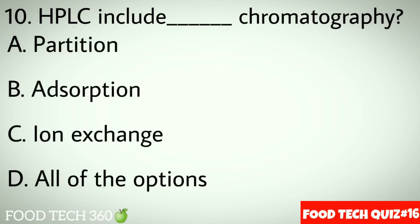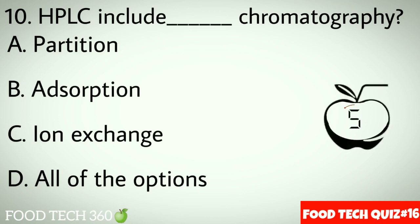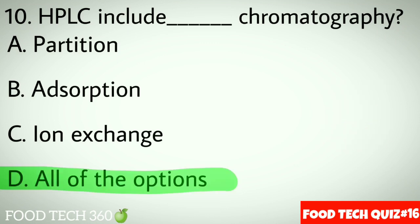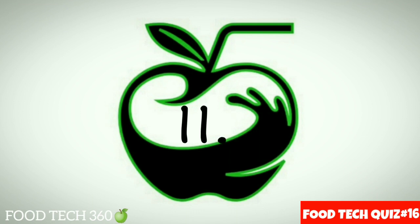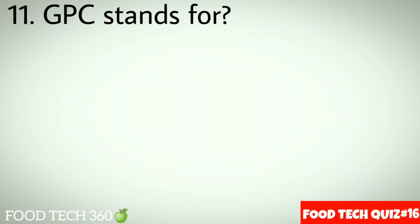Question No.10: HPLC includes dash chromatography. Options A: Partition. B: Absorption. C: Ion exchange. D: All of the options. Correct answer D: All of the options.